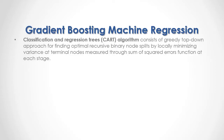Classification and Regression Trees algorithm consists of a greedy top-down approach for finding optimal recursive binary node splits by locally minimizing variance at terminal nodes, measured through the sum of square errors function at each stage.